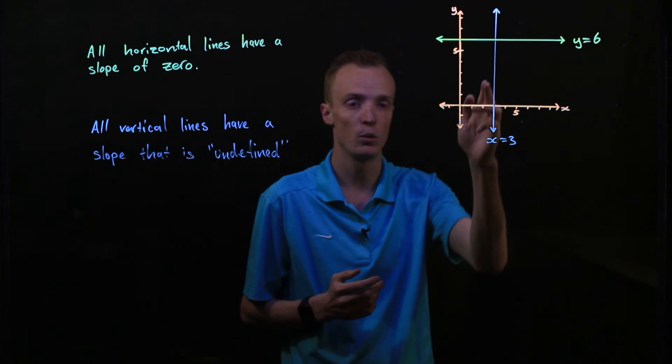For vertical lines, we represent those equations with x equals a value. That value is what the x coordinate is the whole way along that line. It's also the x intercept. When it comes to the slope of vertical lines, you're dividing by zero and you can't divide by zero. So the slope of all vertical lines is undefined.